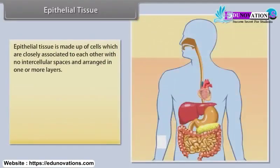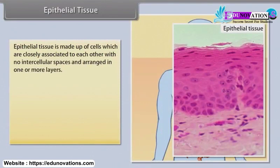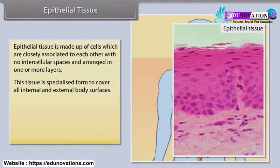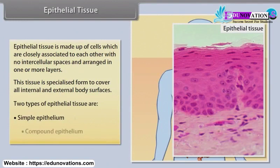Epithelial tissue. Epithelial tissue is made up of cells which are closely associated to each other, with no intercellular spaces, and arranged in one or more layers. This tissue is a specialized form to cover all internal and external body surfaces. The two types of epithelial tissues are simple epithelium and compound epithelium.